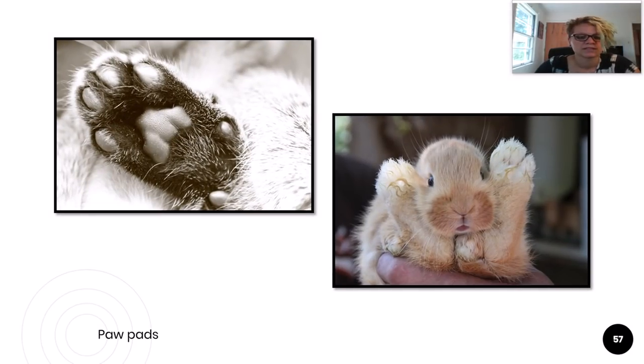Most companion mammals, including dogs and cats, have fleshy paw pads. These pads help cushion and absorb shock from movement. Rabbits are different because they actually just have really thick hair on their feet. There are no paw pads in there.